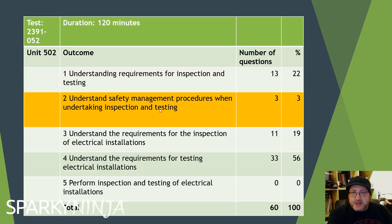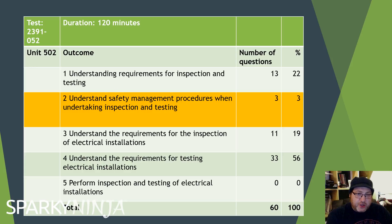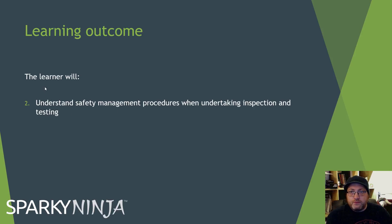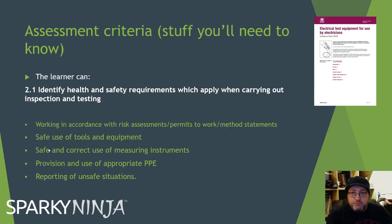In Outcome 1 we discussed understanding the requirements — why we test, when we should test, what certification to use. This video covers the second outcome, which is safety management. The learner will understand safety management procedures when undertaking inspection and testing. The criteria covers what you'll need to know from this outcome.